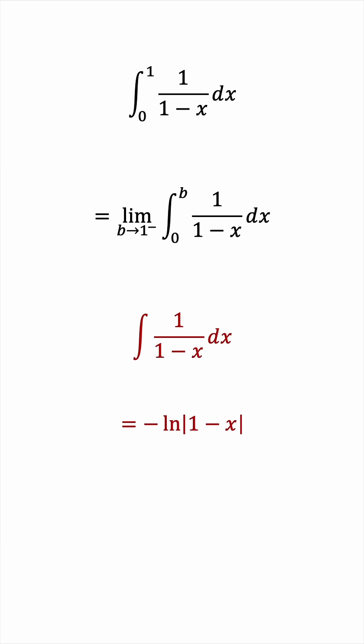So, we're taking the limit as b approaches 1 from below of this negative natural log 1 minus x after plugging in the bounds of b and 0. At 0, we get the natural log of 1, which is 0, so we only have the b bound to plug in.